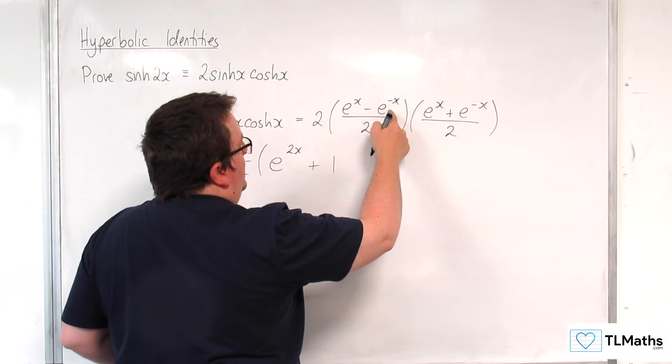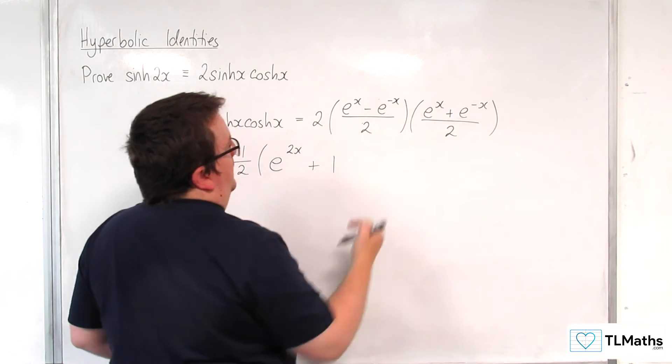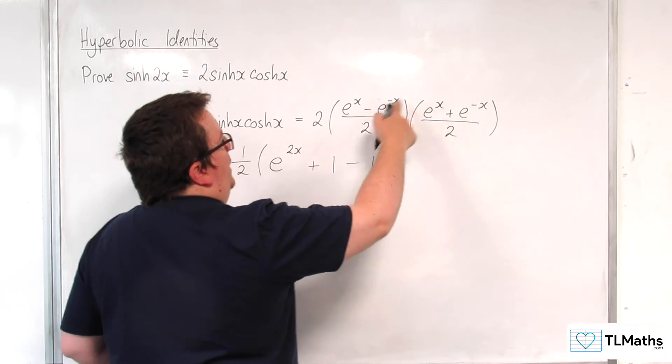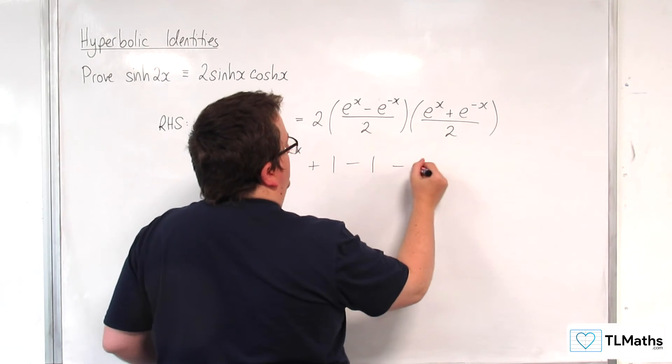We've got minus e to the minus x times e to the x which is going to be take away 1. And then we've got minus e to the minus x times e to the minus x which is take away e to the minus 2x.